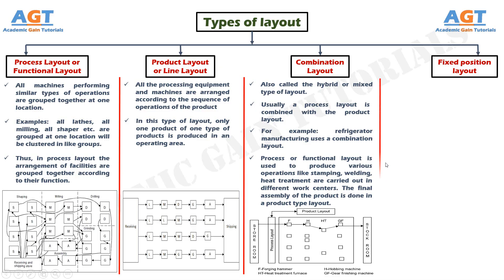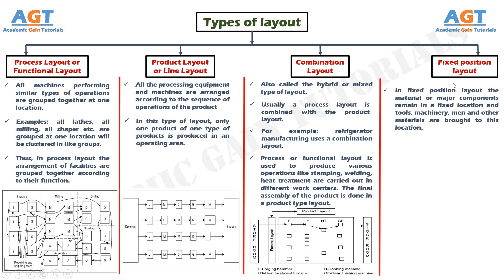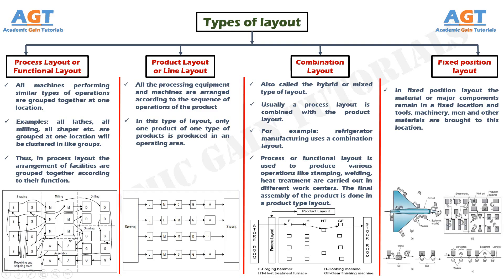The fixed position layout. In fixed position layout, the material or major components remain in a fixed location, and tools, machinery, men, and other materials are brought to this location. In this figure, we can see the fixed position layout designed for the construction of an airplane, where all necessary parts, men, machines, and materials are brought to the location of construction. This type of layout is used if the product being manufactured cannot be easily moved during production.